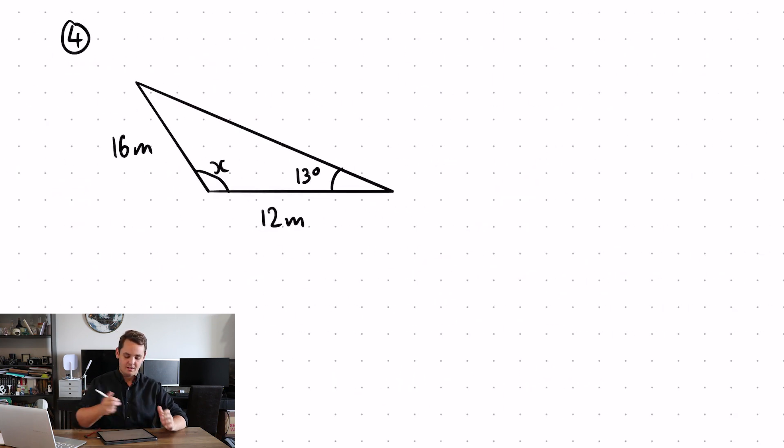Number four, have a go at this question. Pause the video and see if you can do it. Like with question two, this triangle here takes a bit more thinking. The angle we want to find does not have an opposite side. So let's have a look at what information we do have. We've got this side with an angle opposite and we've got this side with an unknown angle opposite. I can use the sine rule to find the angle here, which will allow me then to find angle x. So let's do that.